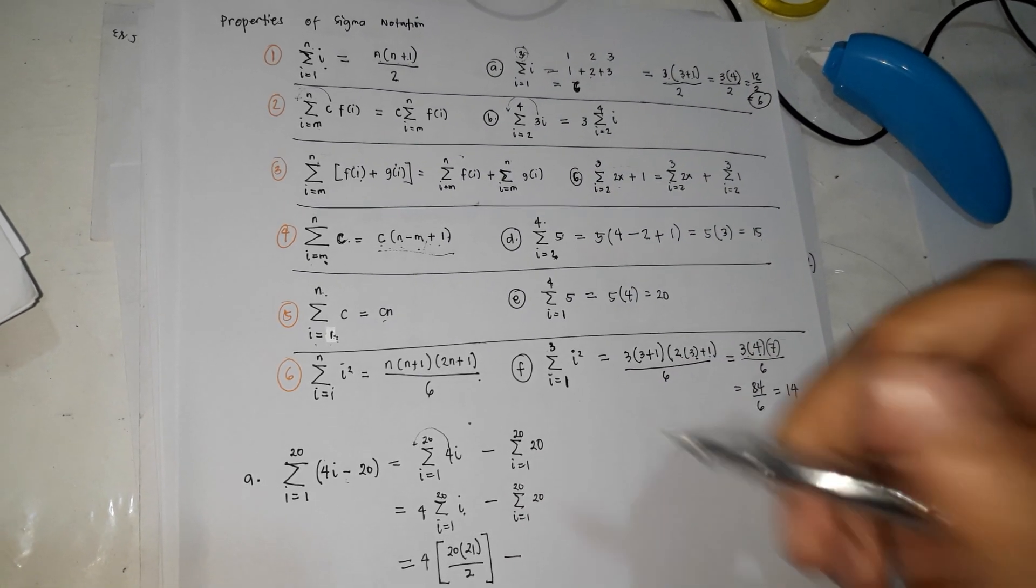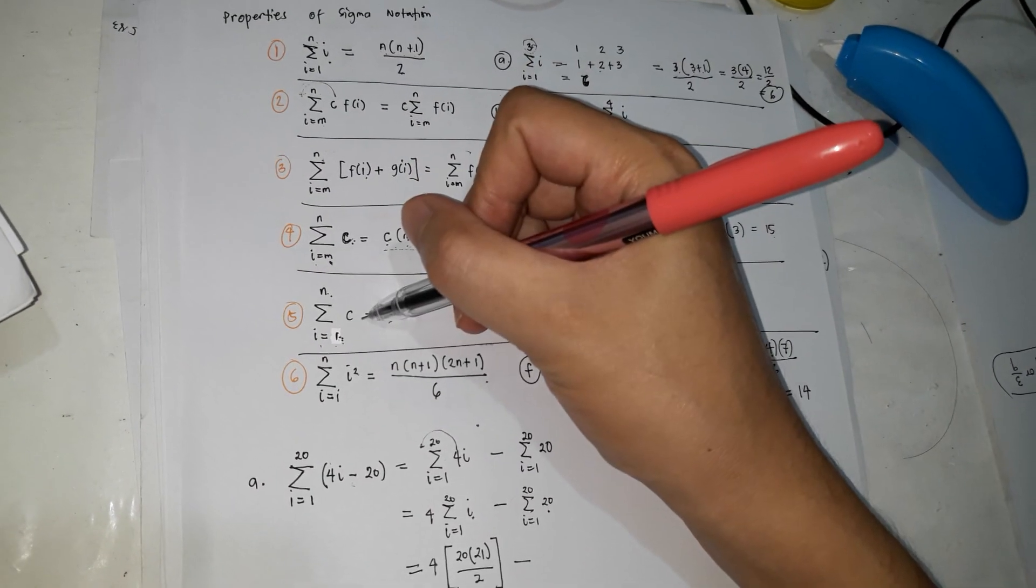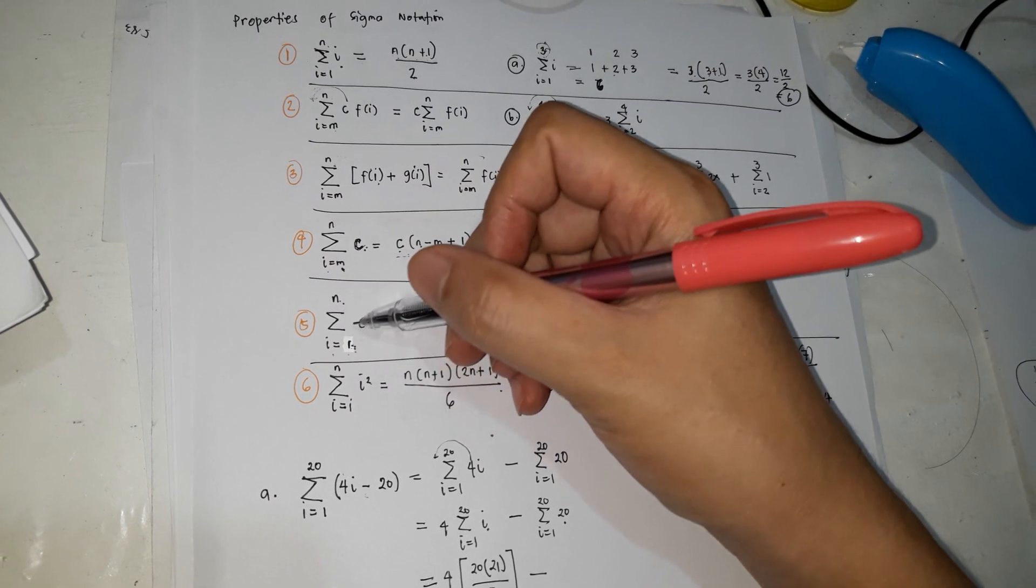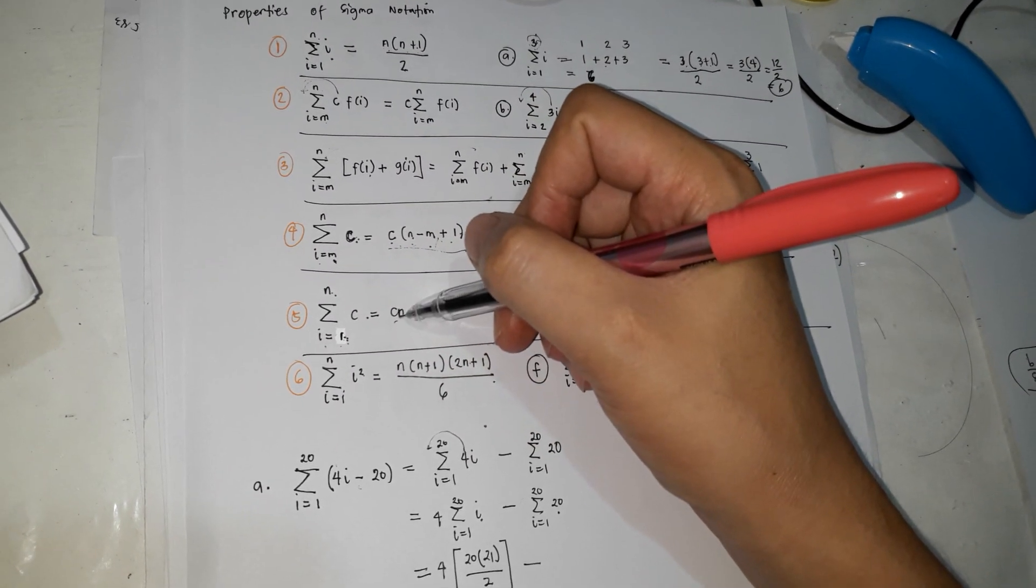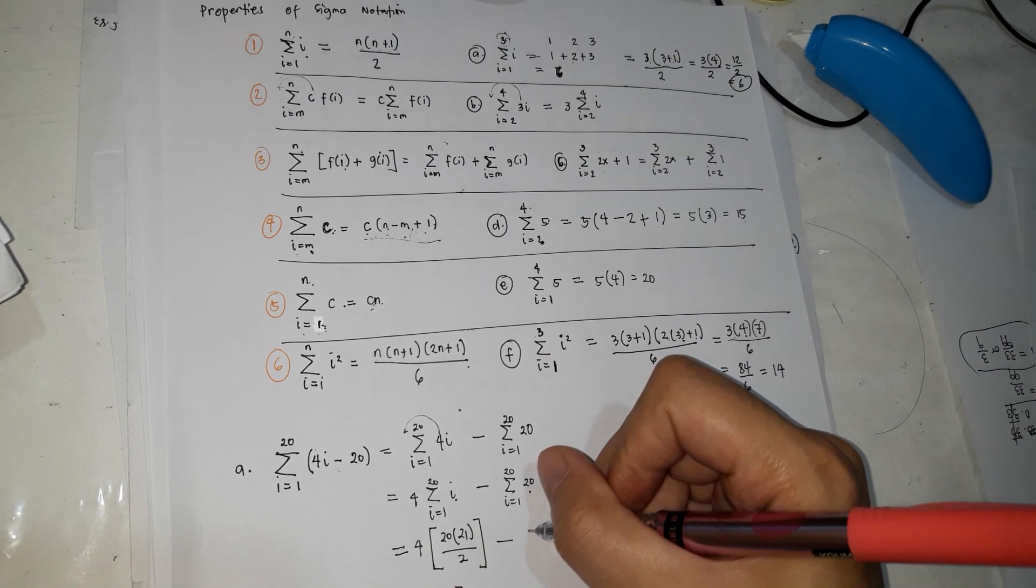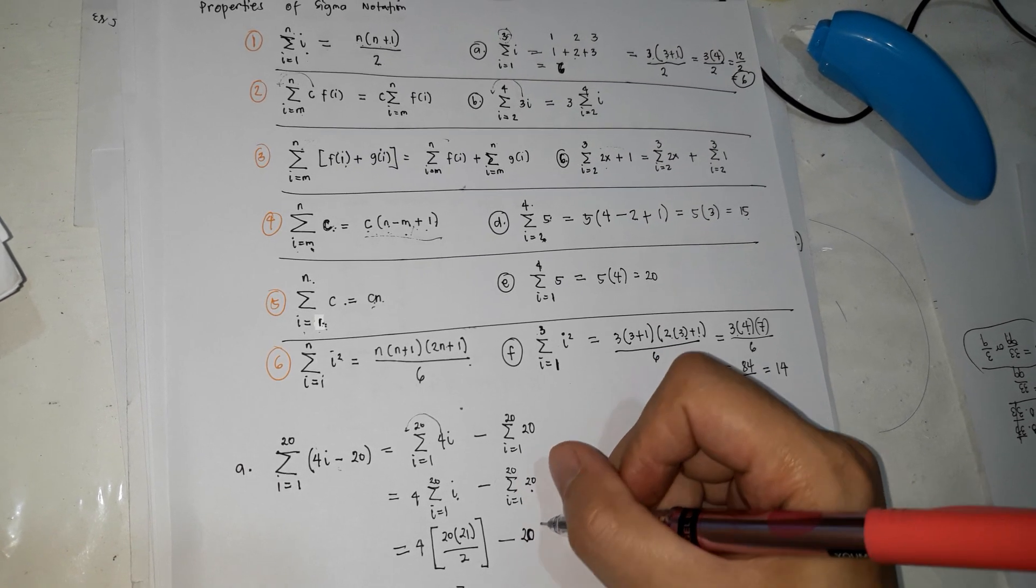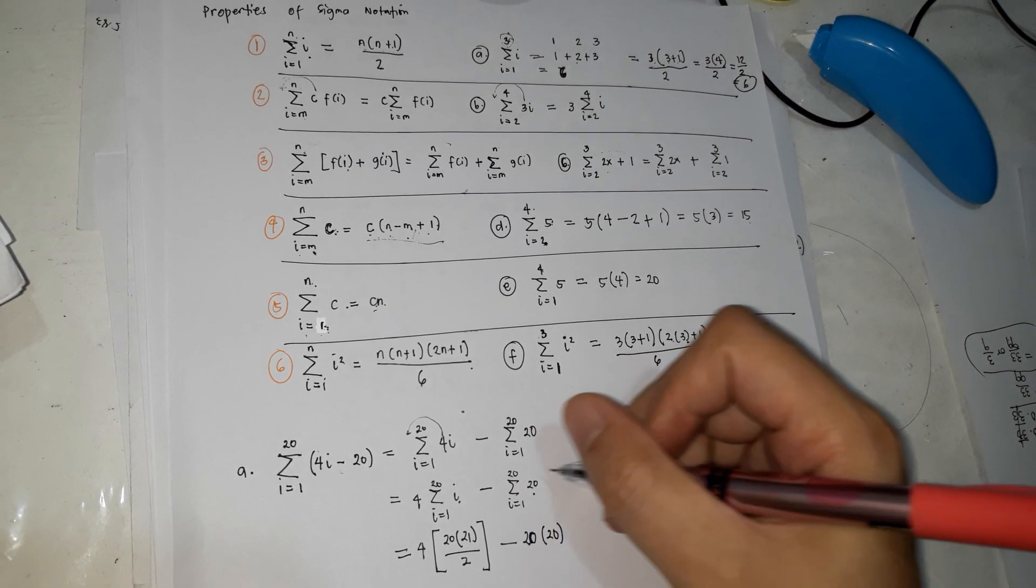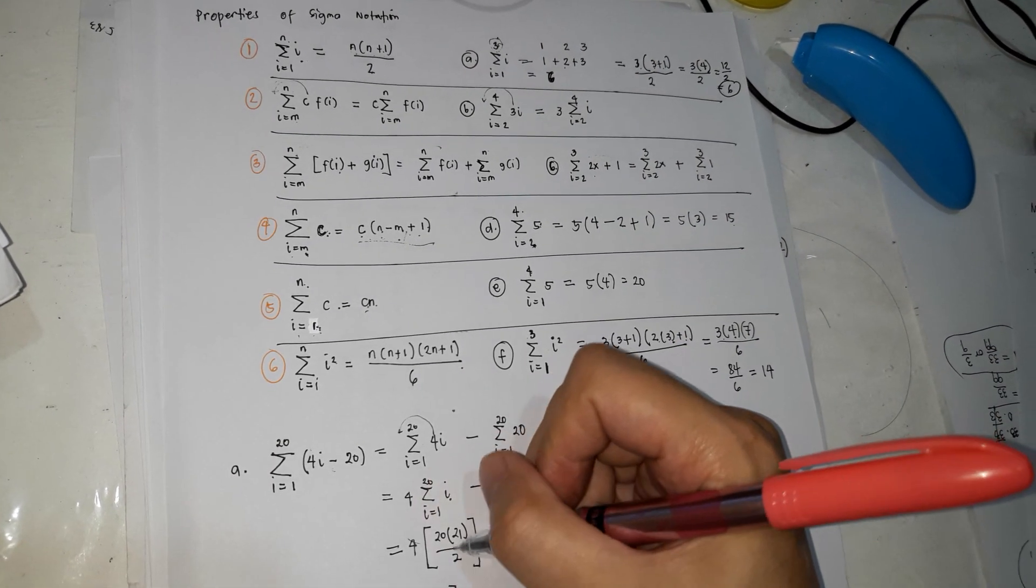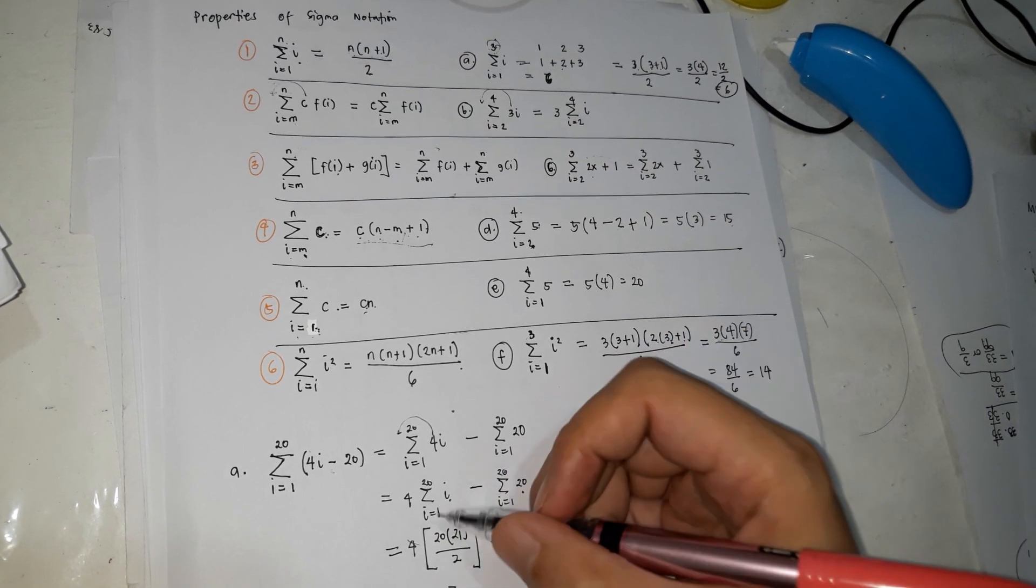As you notice also, this is constant. So kung constant, pwede ito. However, because ang i is equals to 1, so ito na siyang gagamitin natin. This is number 5. So the formula is Cn. So Cn, ang C is 20 times n na 20 rin. So we could start, we could cancel this out, magkiging 2 na yan siya. 2 times 20, or 2 times 20 is 40.